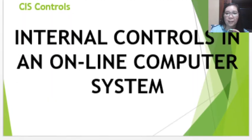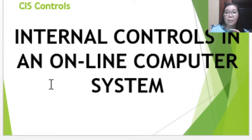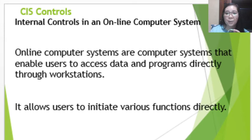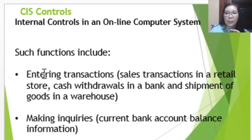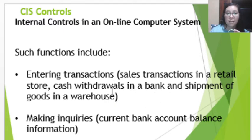For internal controls in an online computer system, online computer systems are systems that enable users to access data and programs directly through different workstations. This setting allows users to initiate various functions directly, such as entering transactions — for example, sales transactions in a retail store, cash withdrawals in a bank, and shipment of goods in a warehouse.